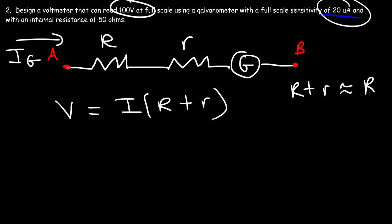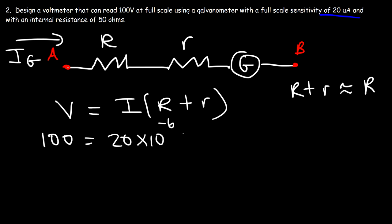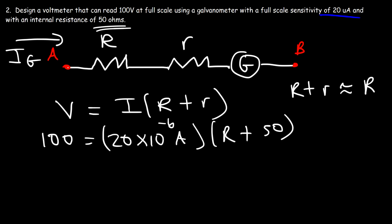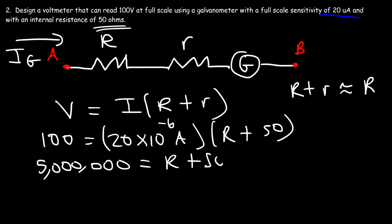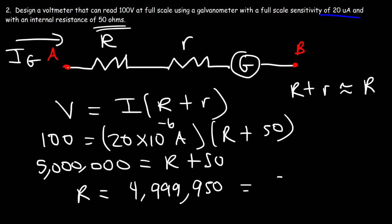We want the voltmeter to read 100 volts when 20 microamps flows through it. So: 100 = 20 × 10⁻⁶ × (R + 50). Dividing 100 by 20 × 10⁻⁶ gives 5,000,000, so R + 50 = 5,000,000. Subtracting 50 gives R = 4,999,950 ohms exactly. In practice, you won't find that exact value, so you'd use a 5 megaohm resistor.